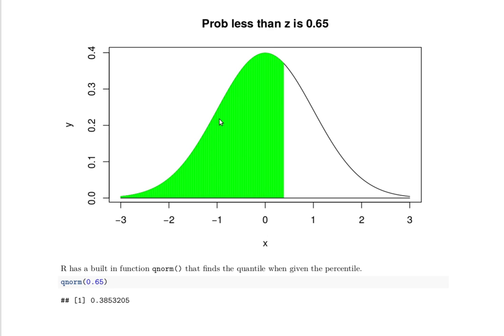...when we know the percentile is 65%, then we can find the Z value. And notice that Z value is 0.38.